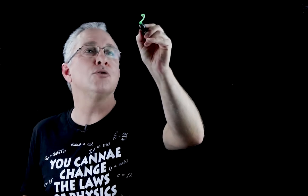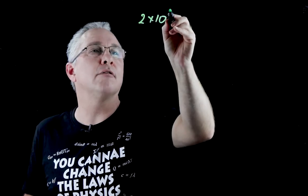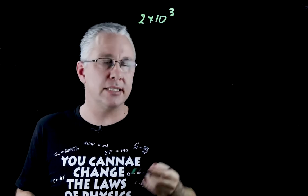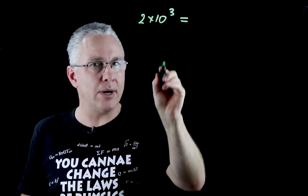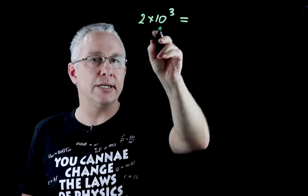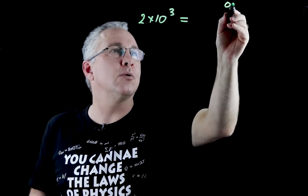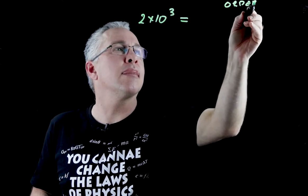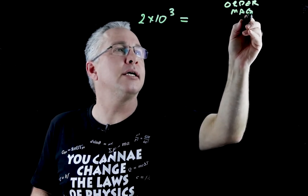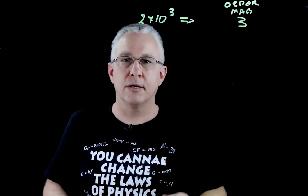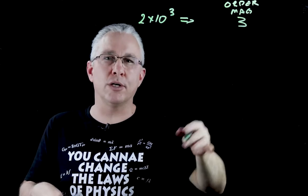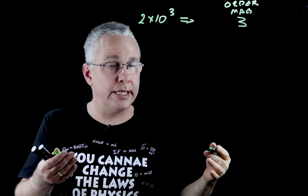Let's say I have a number, let's say 2 by 10 to the power of 3. Let's say meters, it's 2 kilometers. The order of magnitude is the power that this power is in here. So in other words, the order of magnitude in this case is 3. In other words, it's of the order of 10 to the power of 3.